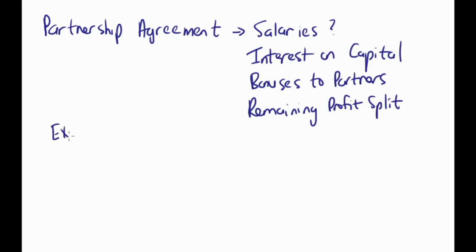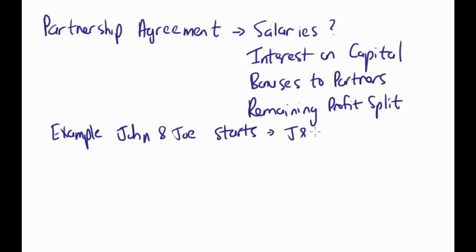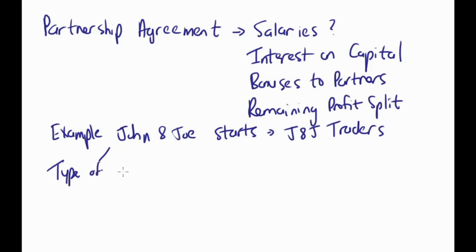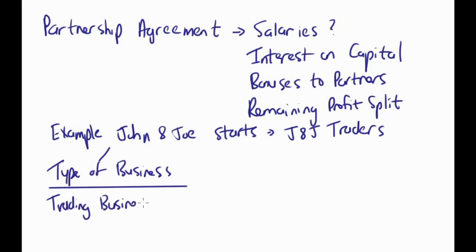For example, you could have John and Joe start a partnership called J&J Traders. They decide they're going to buy and sell a product. The type of business they're starting is a trading business. Everything you've learned around a trading business — sales, cost of sales, trading stock — all of those things are still applicable from day to day, month to month. So that stays the same.